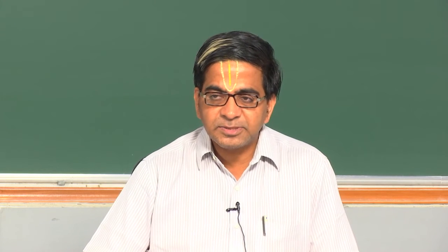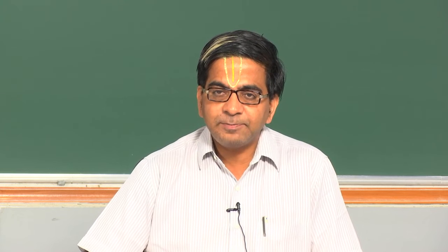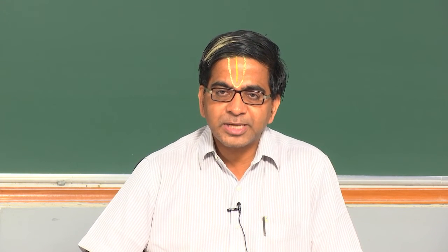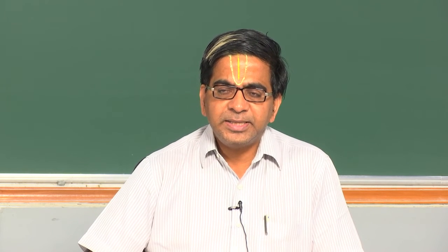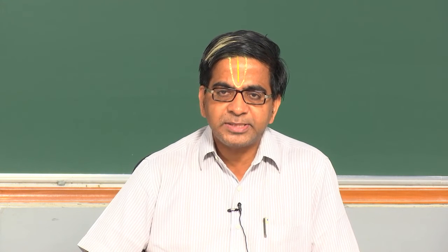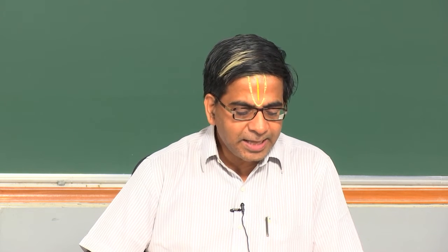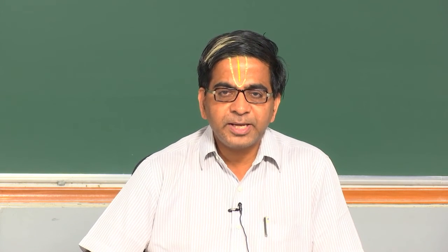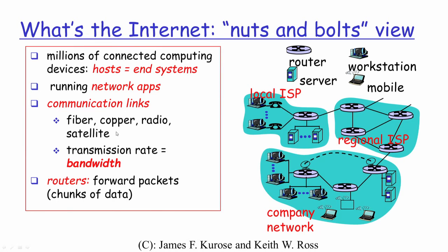So when talking of the internet from the individual components perspective, you have the host or end systems running network applications such as email, browser, or web server. These network applications exchange data between end systems over communication links — which could be fiber optic, copper, or radio. We also introduced the concept of bandwidth, which is the total capacity or transmission rate available for data to be transferred from one machine to another.